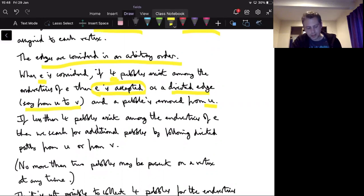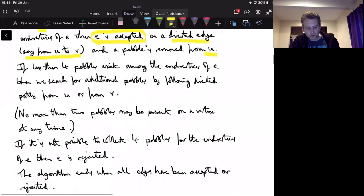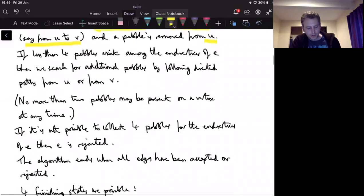If less than four pebbles exist, then we can't immediately accept E, but we still have a chance because we can do one other thing. We can search among the rest of the graph looking for additional pebbles to move them to U or V. But we can only do this in a certain sort of way. So what you do, and it's going to be much clearer in examples, but we search for additional pebbles by following directed paths from U or from V. So you have to follow the directions. If you can't follow the directions anywhere, then you can't find any more pebbles, even if lots of them exist, and hence you're stuck.